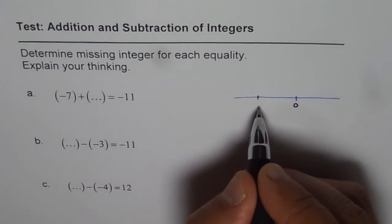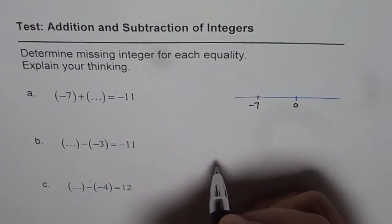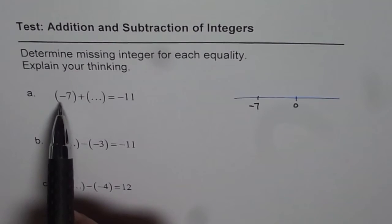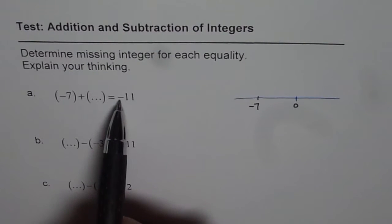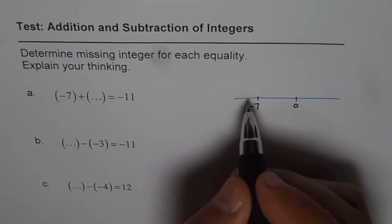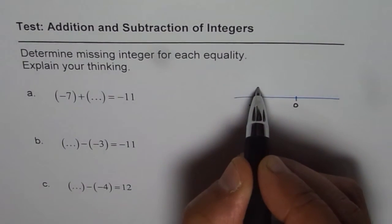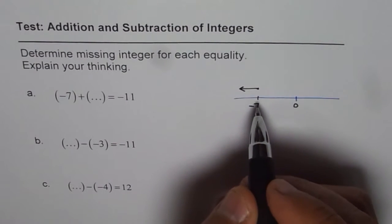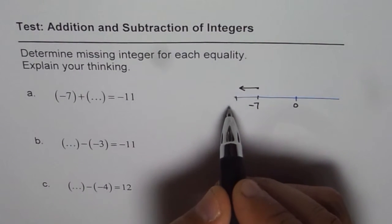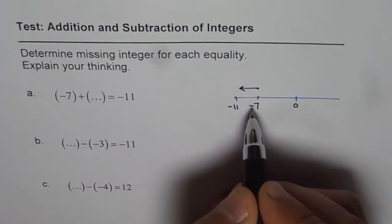And somewhere here is minus 7. The thing is, what should you add to minus 7 so that you get minus 11? So to go to minus 11, I will have to move left, right? And then, how many units? We have to reach minus 11.